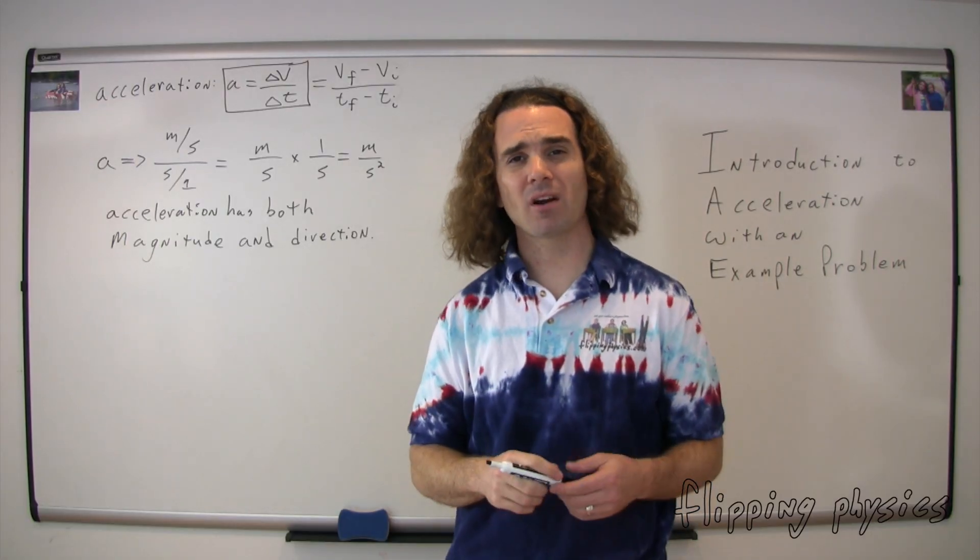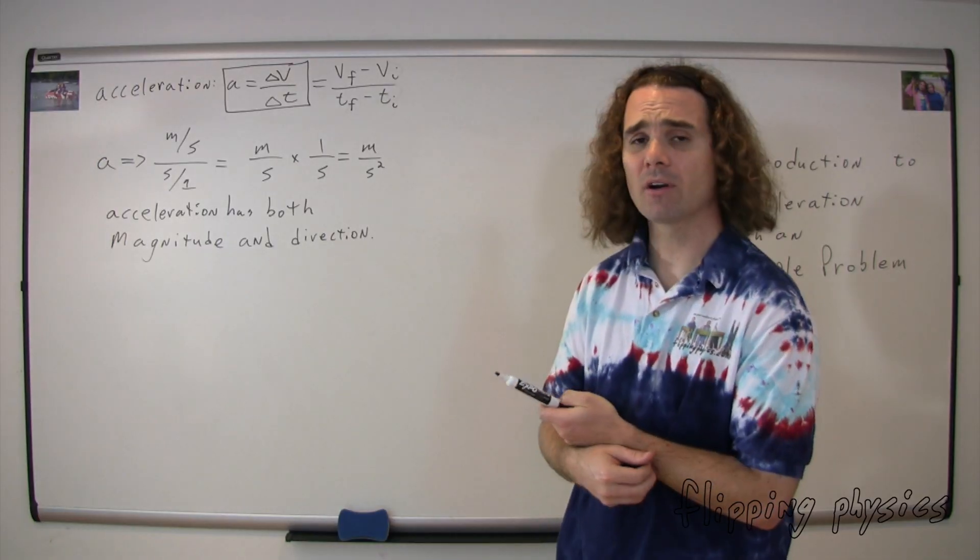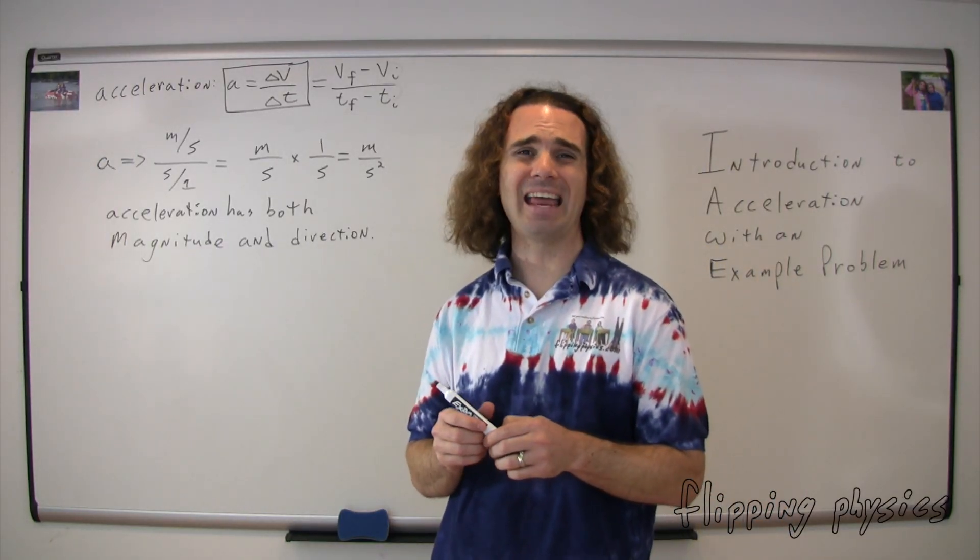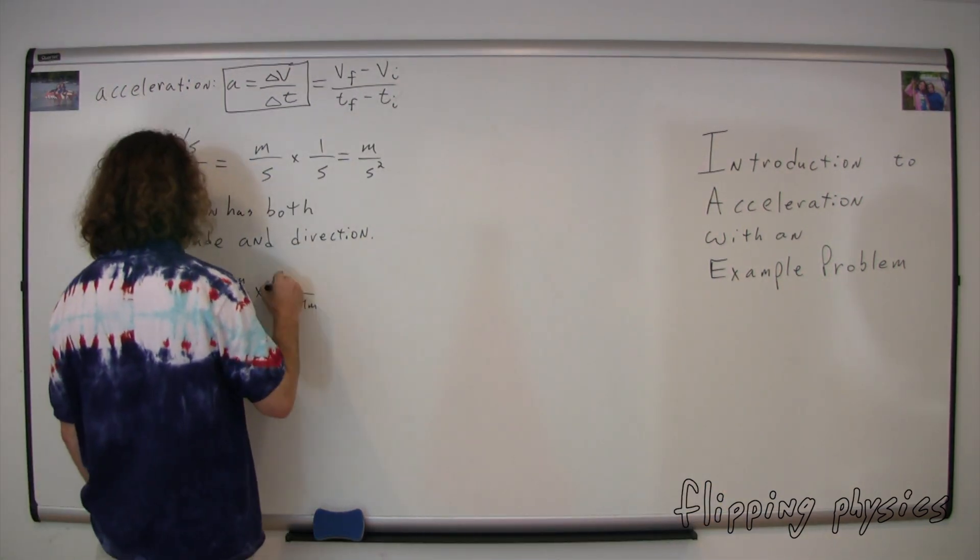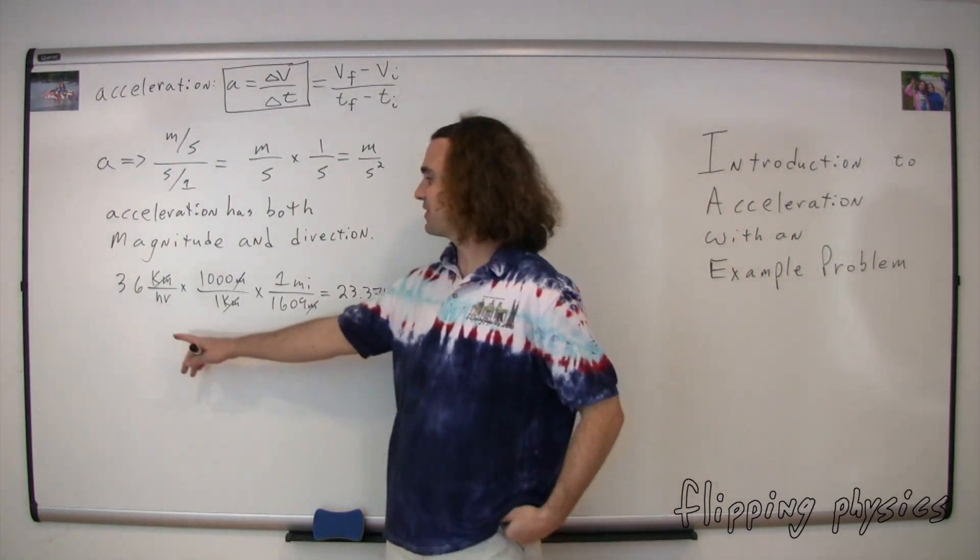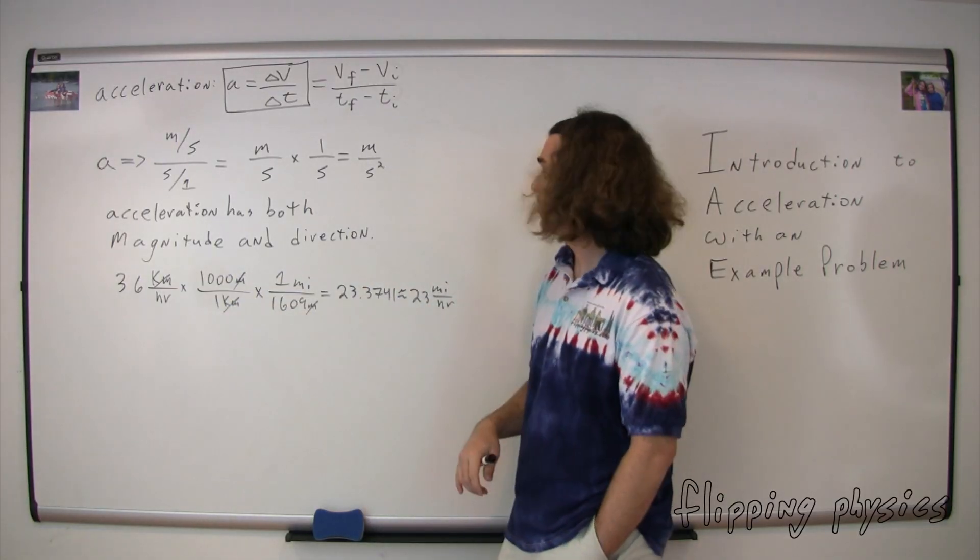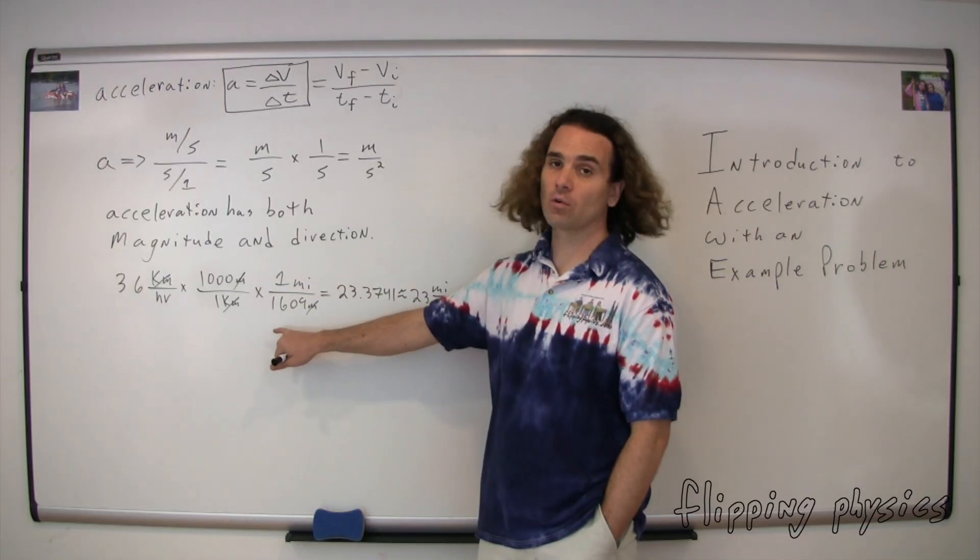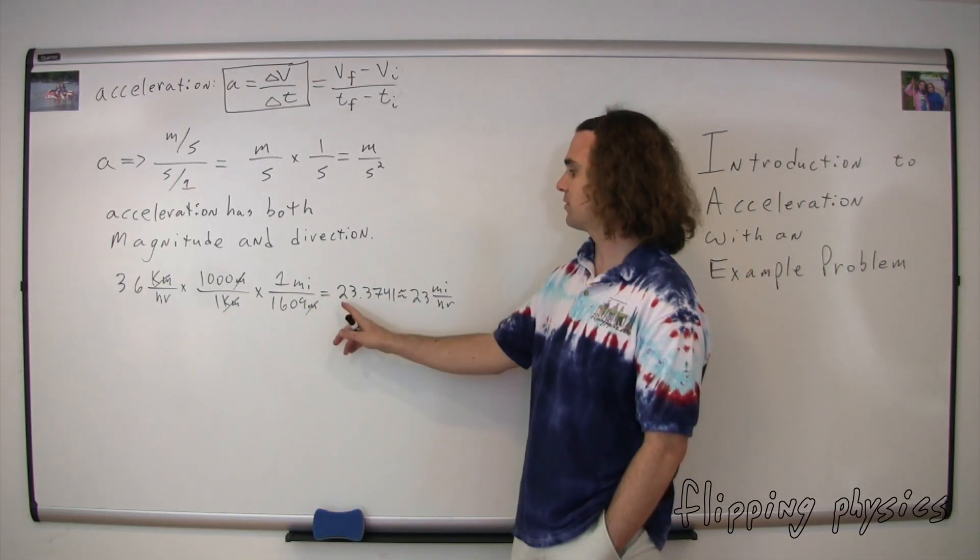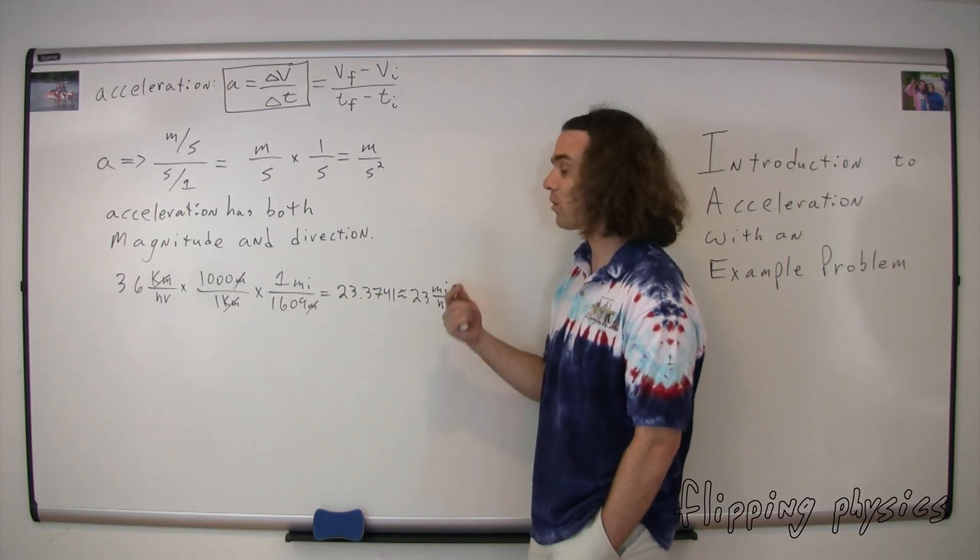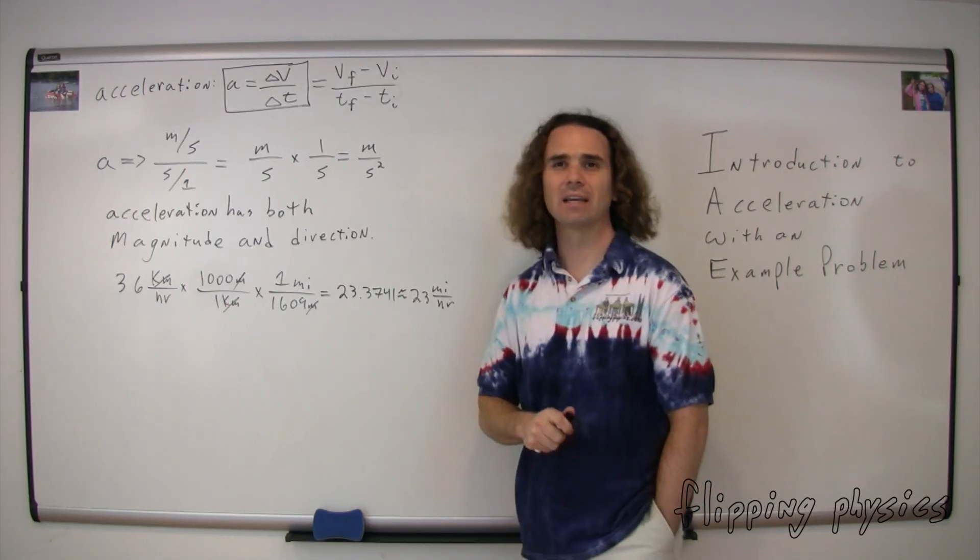Thanks. Just so you know, this 36 kilometers per hour, some of you might not be familiar with how fast that is, so let's convert to miles per hour. There are 1,609 meters in one mile. Therefore, we can take our 36 kilometers per hour, multiply it by 1,000 meters over 1 kilometer. The kilometers cancel out. We can then multiply it by 1 mile over 1,609 meters. The meters then cancel out. We're left with miles per hour. And that works out to be approximately 23 miles per hour. Just to give you an idea of how fast we're moving at the beginning here.